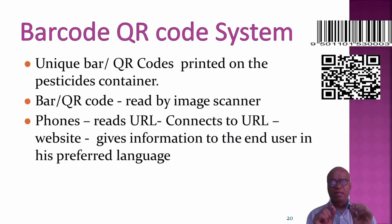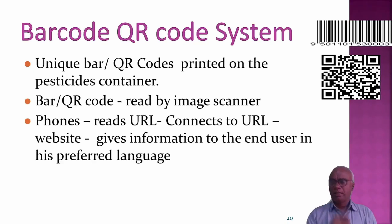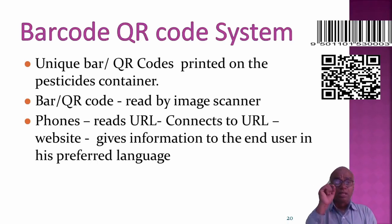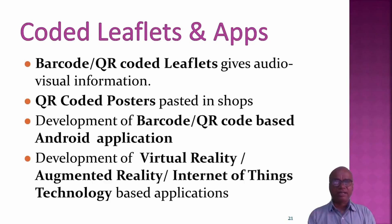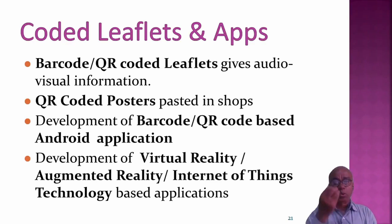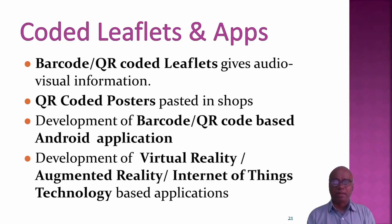If we take the barcode system, each and every pesticide can be barcoded and printed on the pesticide container. Farmers with Android phones and an image scanner can read the URLs, which connect to websites and give proper, correct information in their preferred language. Coded leaflets and apps — barcode or QR-coded leaflets — can also provide audio and visual information. QR code posters can be pasted in the shop, and we can develop barcode or QR code applications using virtual reality, augmented reality, and Internet of Things technology.